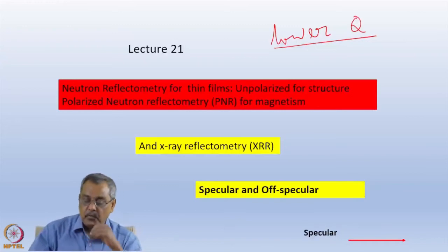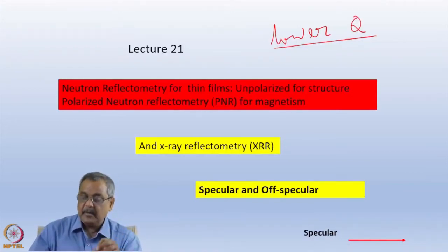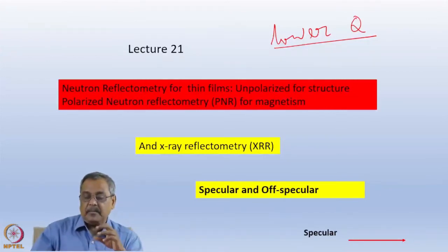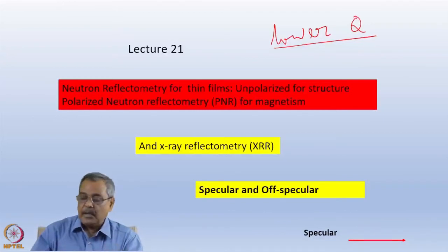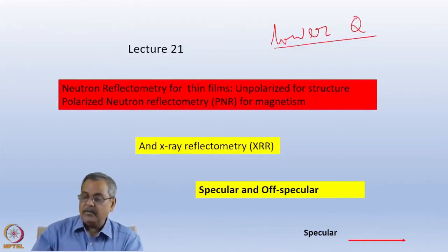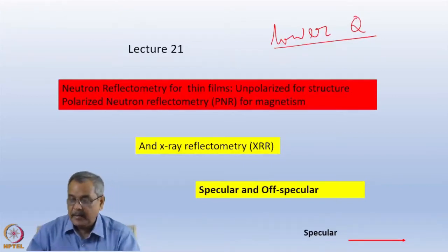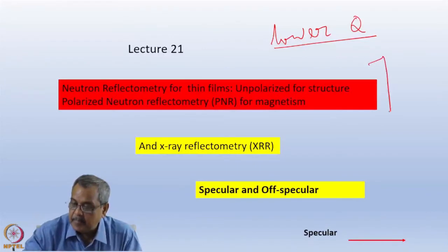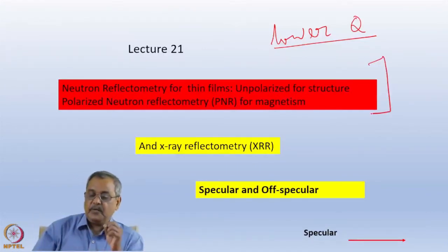This is an extremely important tool in the hands of experimentalists at present, specially for magnetic thin films. Since the discovery of giant magnetoresistance, a lot of work is getting done in the field of thin films and their magnetism, interface coupling, interface magnetic moment, and so on. All these characterizations can be done using Neutron Reflectometry.